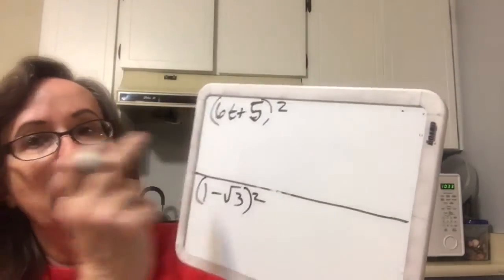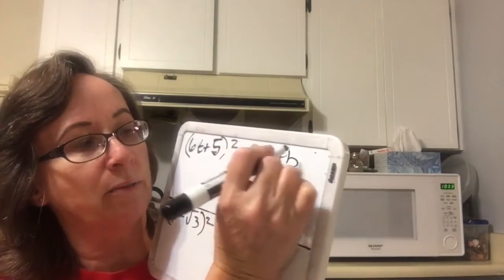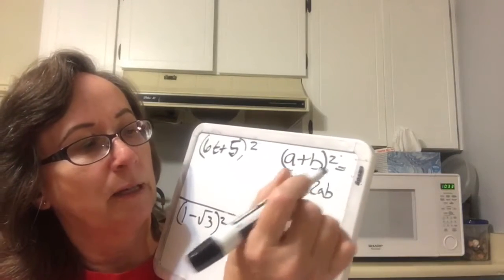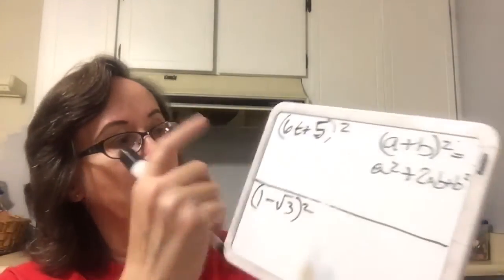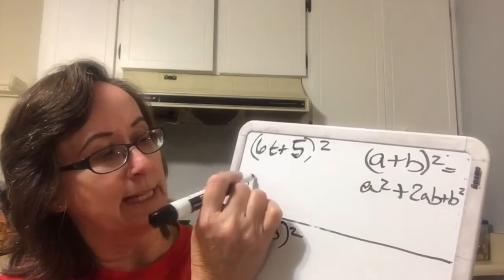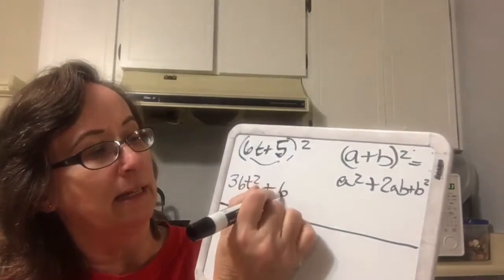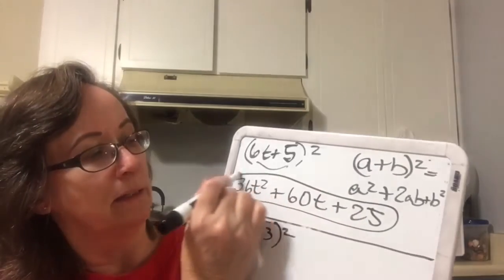This one is a 6t plus 5 quantity squared. They're putting it here as a reminder of what happens when we square a binomial. Remember, a plus b quantity squared equals a squared plus 2ab plus b squared. Applying that here: the first term squared is 36t squared; the product of the two terms doubled is 30t doubled which is 60t; and the last term squared is 25. None of those combine or simplify at all.